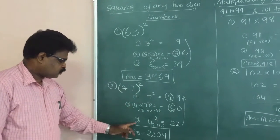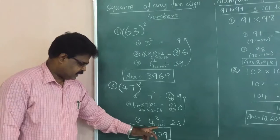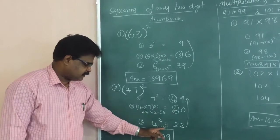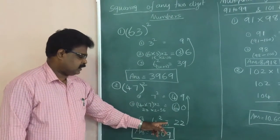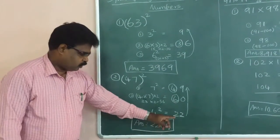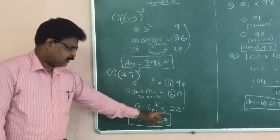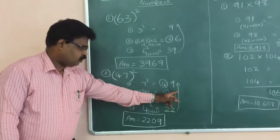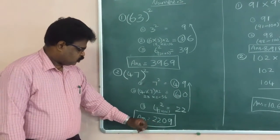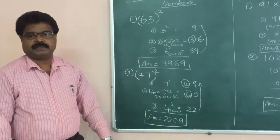Then square the tens digit: 4 squared equals 16. Add the carry — 16 plus 6 equals 22. Now write 22 on the left-hand side, then 0, then 9. The final answer is 2,209.